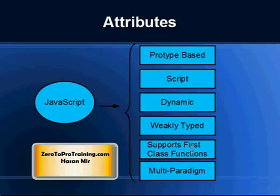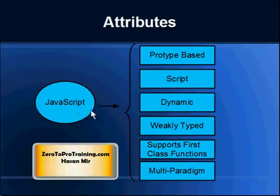JavaScript supports first-class functions, meaning functions are objects themselves. They have properties and methods, and they could be assigned to variables and passed as arguments. JavaScript is also a multi-paradigm language that supports more than one programming paradigm, and one of those paradigms is object-oriented programming.